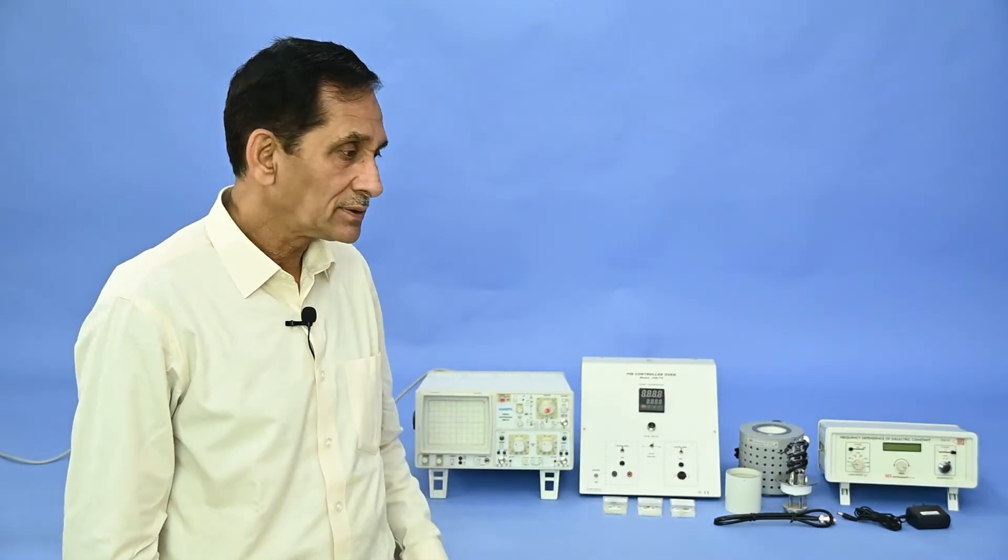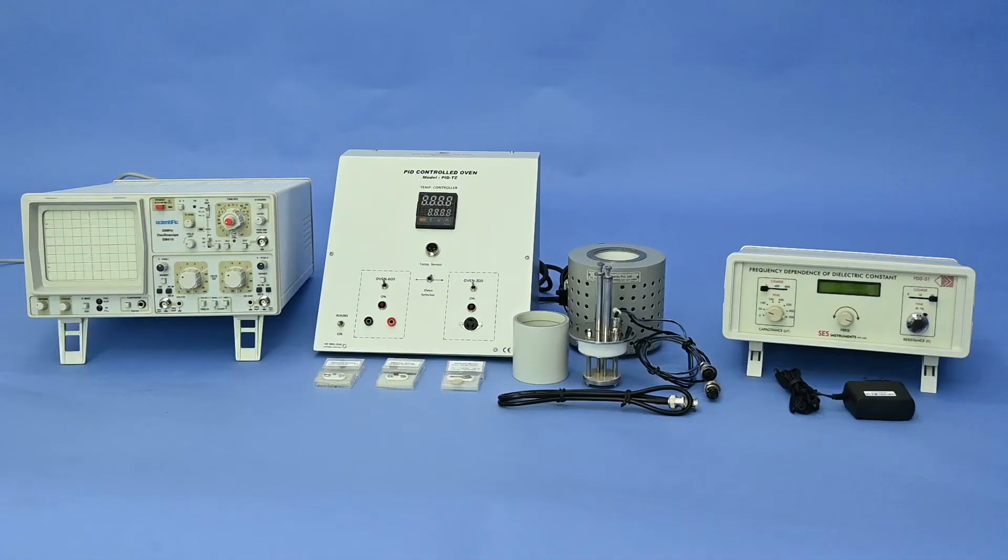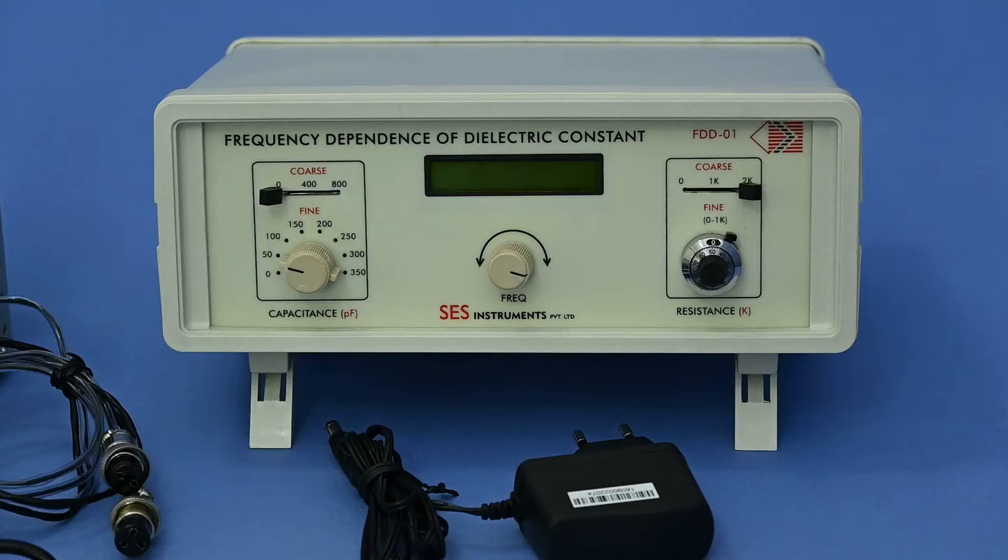When you open the carton, you will get the different parts of the instrument. Main unit of study of frequency-dependent dielectric constant, model FDD01, consists of built-in sine wave oscillator with frequency range 1 kHz to 20 MHz, but experiment used only from 1 kHz to 50 kHz.